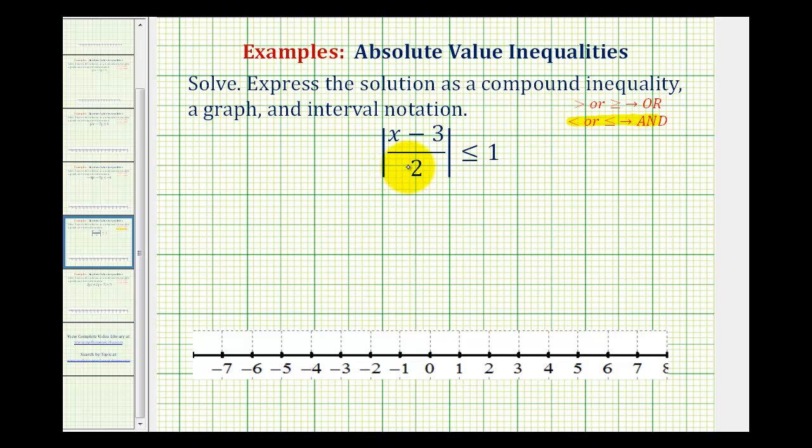So for the first inequality, we'll just drop the absolute value. So we'll have the quantity x minus three divided by two is less than or equal to one. And for the second inequality, we'll drop the absolute value, but then we're also going to reverse the inequality and change the sign of the one. So we'll have greater than or equal to negative one.